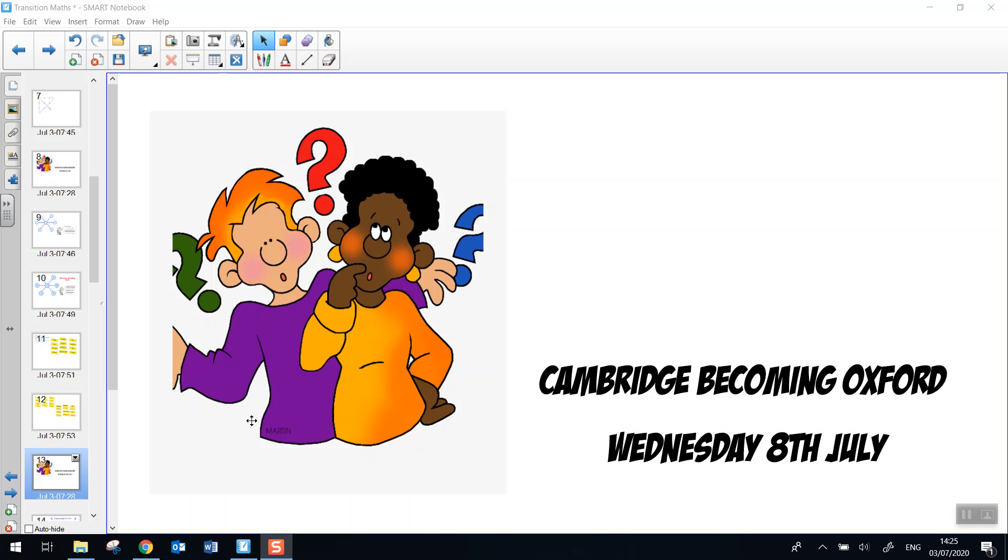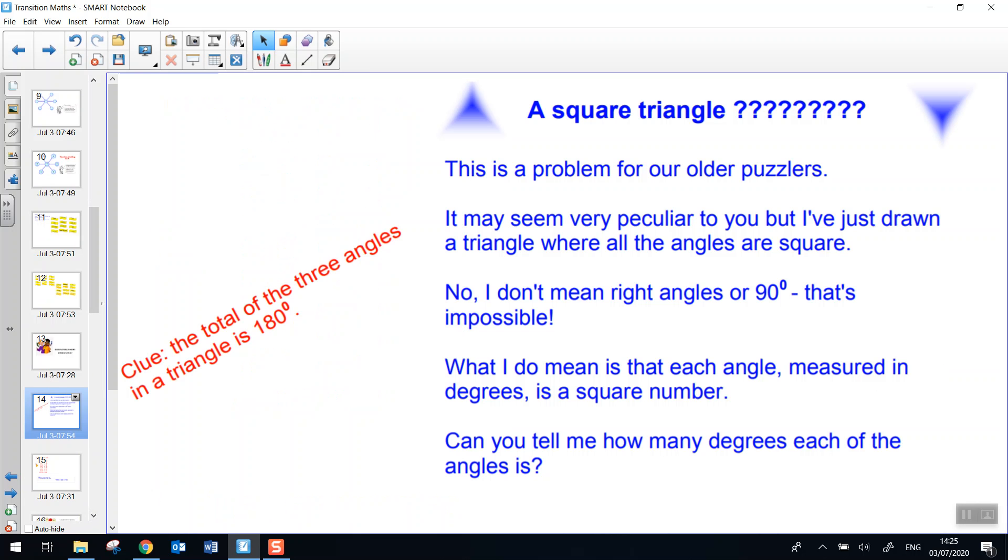Okay, so let's have a look at our first puzzle for today. This is the first puzzle for today. It says a square triangle. It's a bit strange isn't it? A square triangle.